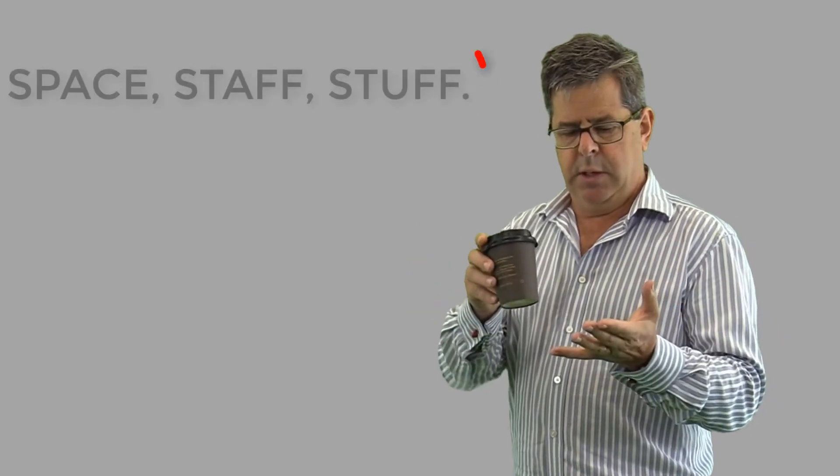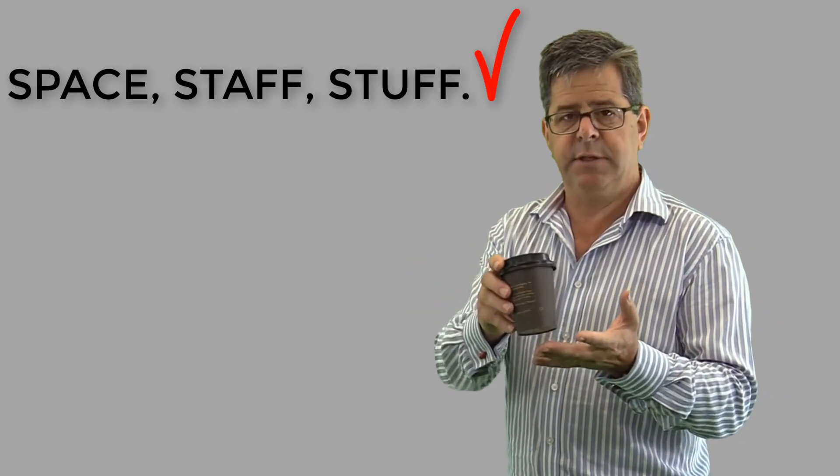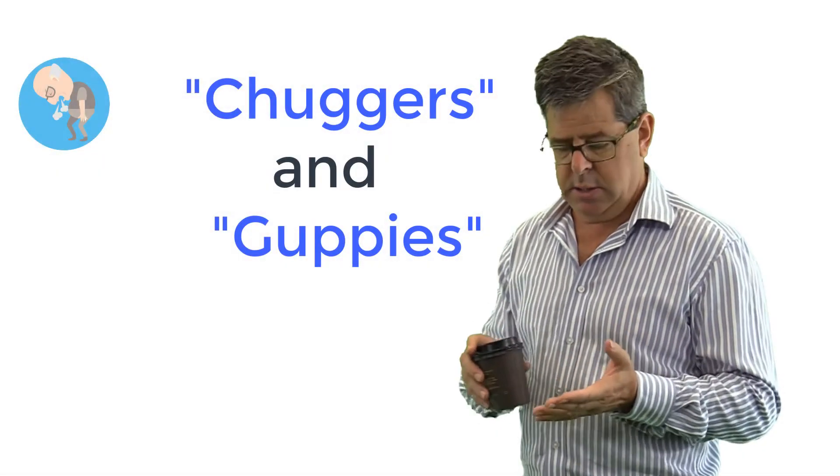Let's take a step back from the important space, staff, and stuff. Let's say you've got that together. I like to think of life-threatening asthma—and it's somewhat artificial—into two major groups. I call them the chuggers and the guppies.